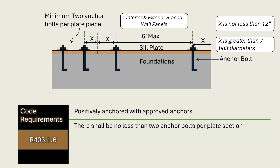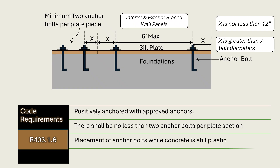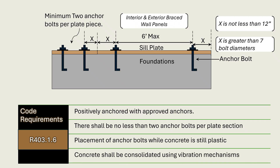Section R403.1.6 also provides installation guidelines for the placement of anchor bolts. The code allows placement of anchor bolts while concrete is still plastic, before it has set. Builders are allowed to pour the foundations and then place the anchors into the foundations while the concrete is still soft and workable before initial set has occurred. The code specifies that concrete shall be consolidated using vibration mechanisms where anchor bolts resist placement or where consolidation of concrete around the anchor bolt is impeded, ensuring full contact between the anchor bolts and the concrete.